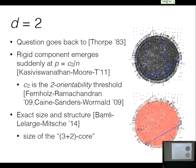Maybe first: what happens in d = 2? The world knows quite a bit. The question is somewhat old — it seems to go back to Thorpe in 1983 in statistical physics, where he asked what the rigid substructures are as a function of p. This picture is meant to be indicative. The edges are color-coded: gray means the largest rigid substructure containing that edge is the edge itself; blue means it's a triangle.